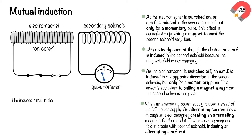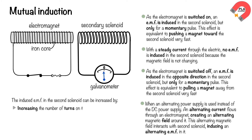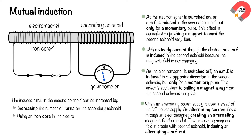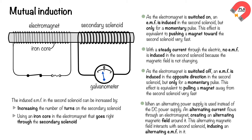The induced EMF in the second solenoid can be increased by increasing the number of turns on the secondary solenoid, or by using an iron core in the electromagnet that goes right through the secondary solenoid. This principle is applied in transformers, where the mutual inductance between two coils allows for the efficient transfer of electrical energy between them.